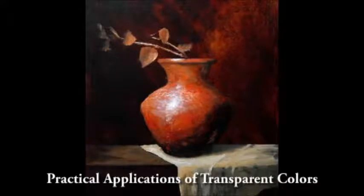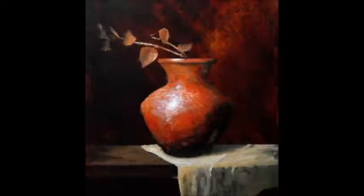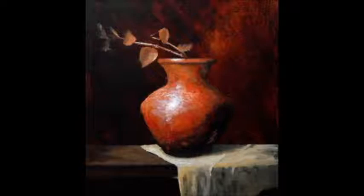We all go to the art store and see the tubes, and a lot of times they have little squares or boxes on them that tell you whether or not the paint is opaque or transparent. Some of the transparent colors are alizarin crimson, permanent rose, olive green, and transparent oxide red. The opaque colors are generally the cadmium colors, the umbers, and titanium white — whatever white you're using is always very opaque.